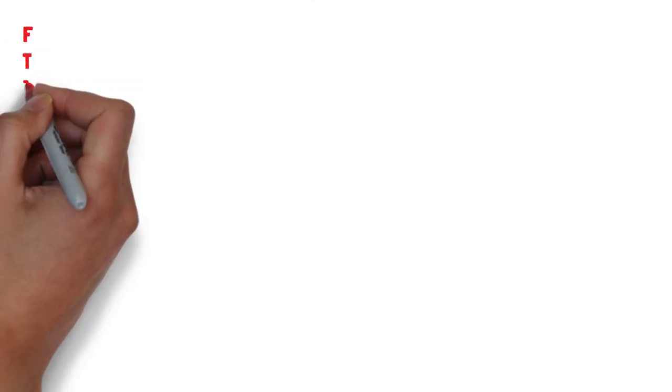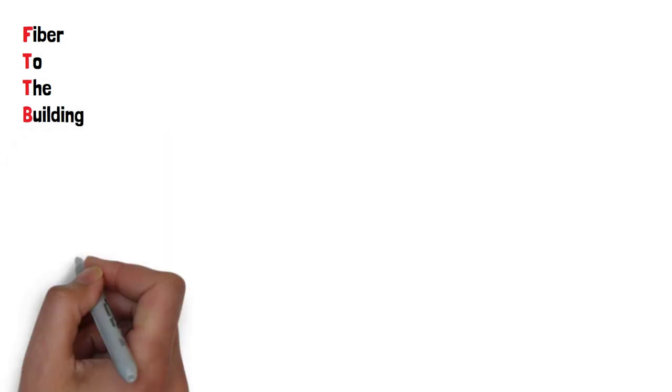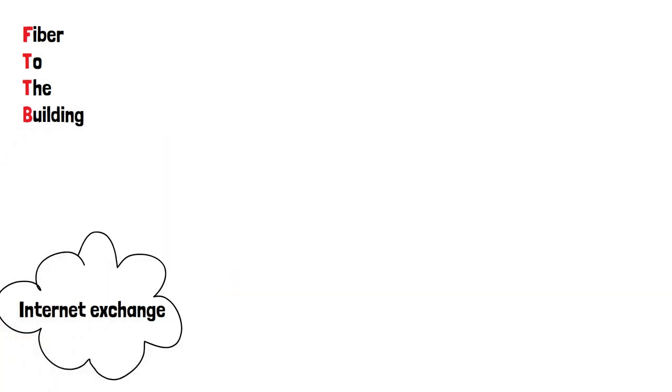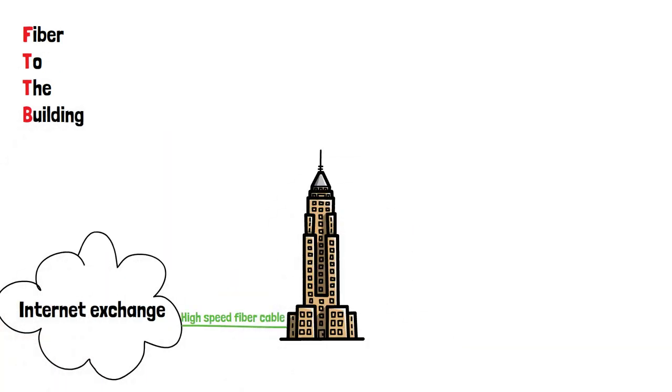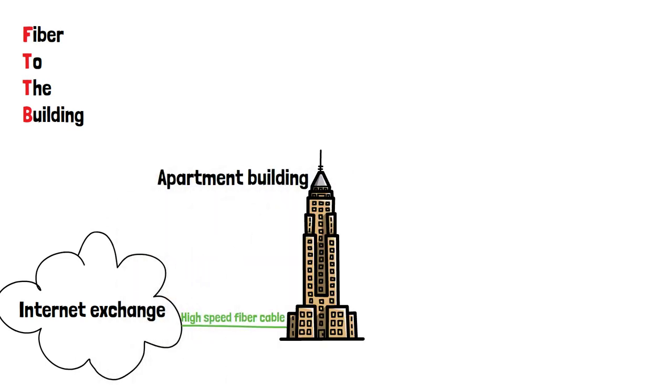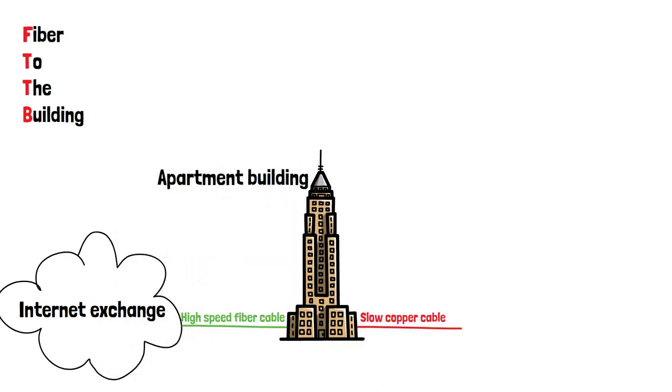Finally, let's look at FTTB, which stands for fiber to the building. FTTB uses fiber optic cables to connect to a building and then uses traditional copper wiring to connect to individual units within the building.